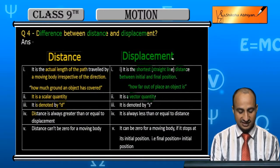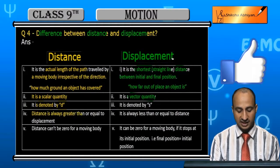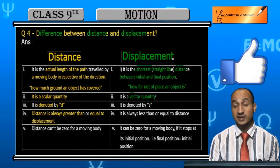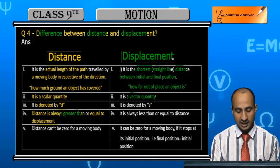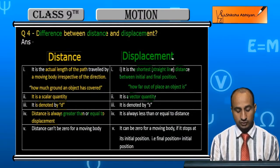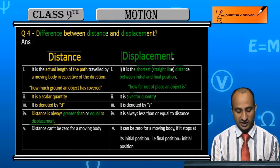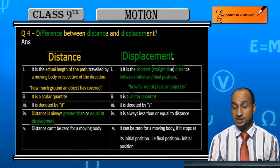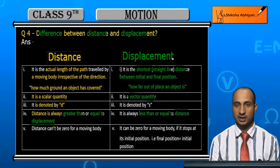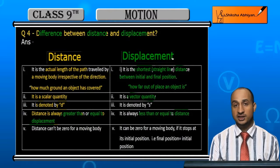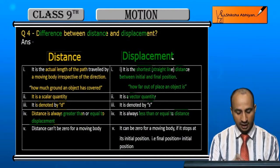Distance is always greater than or equal to displacement. Displacement is always less than or equal to distance — it is either smaller than distance or equal to distance.